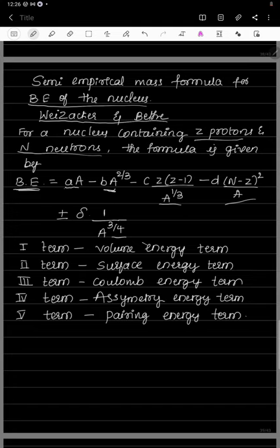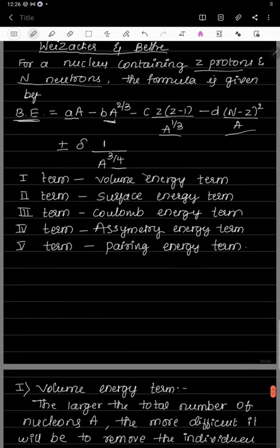We will now study what each term represents one by one. The first term, small a into capital A, is called the volume energy term. This term adds to the binding energy — it increases the binding energy.